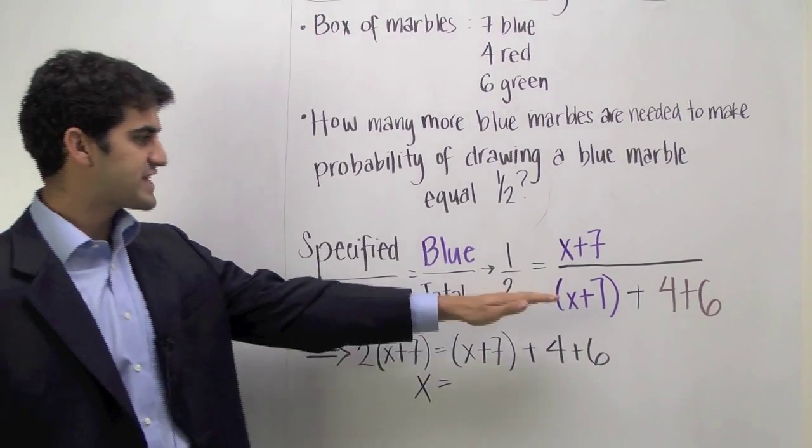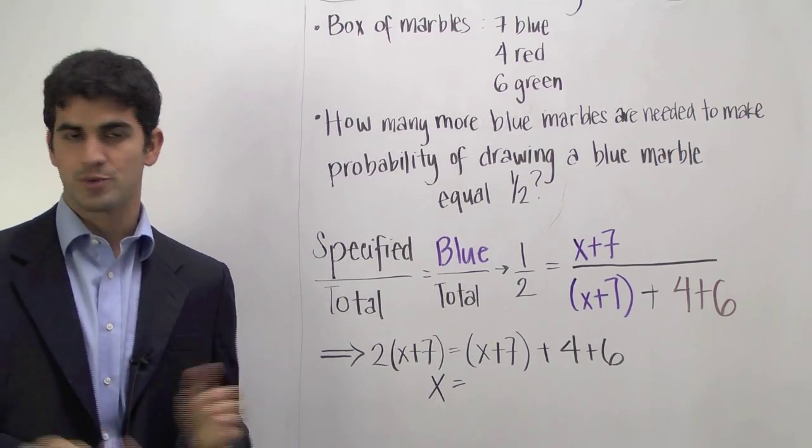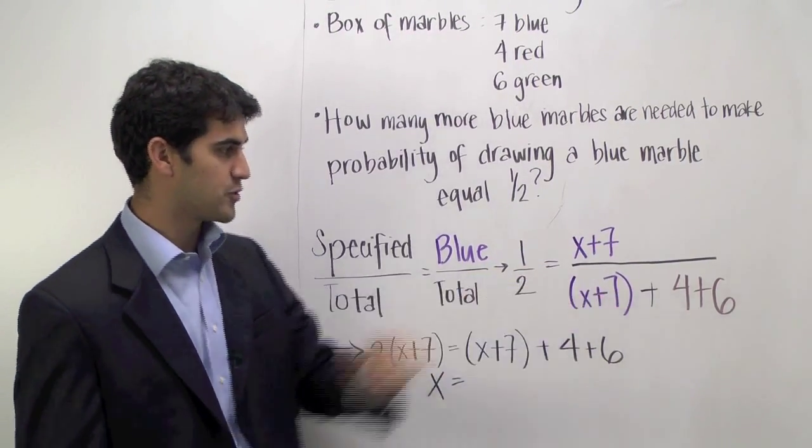So once we've set up this equation, we've solved all of the probability part of this problem. At this point, it's just algebra. We have 1 half is equal to x plus 7 divided by x plus 7 plus 4 plus 6.